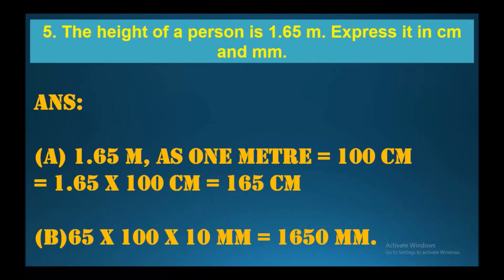The height of a person is 1.65 meters. Express it in centimeters and millimeters. Since one meter equals 100 centimeters, we multiply 1.65 by 100 to get 165 centimeters. Next, to convert to millimeters: 1.65 multiplied by 100 multiplied by 10, so we get 1650 millimeters.